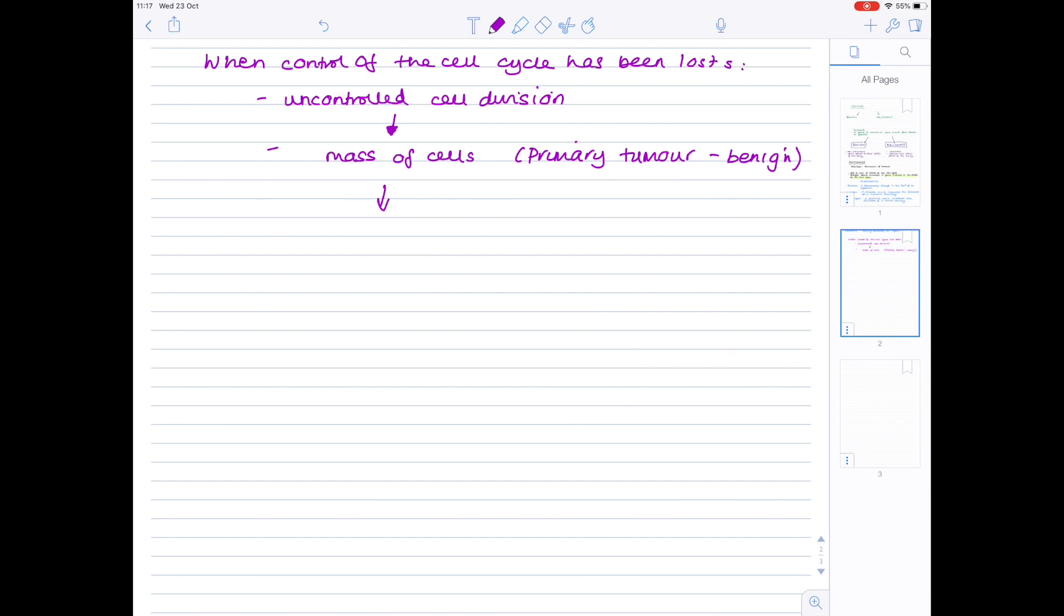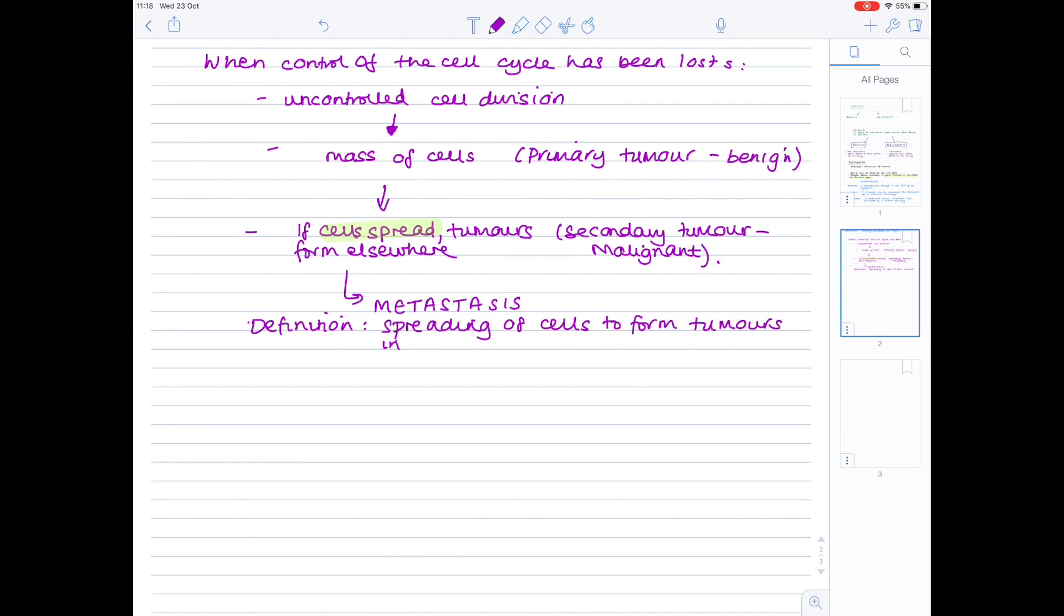If they do spread, tumors form elsewhere, and therefore these are known as secondary tumors. They tend to be far more dangerous. We say that they're malignant, and this is really what the cancer is. Notice that when the cells spread, metastasis is taking place. The definition is the spreading of cells to form tumors in different parts of the body.